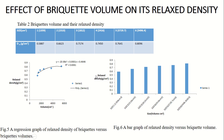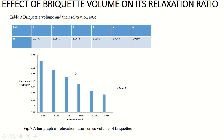Looking at the effect of briquette volume on relaxed density — which is measured after sun-drying — we can see that as the size increases, the relaxed density also increases. We can see the formula and the R-squared value. For briquette volume and relaxation ratio, we can see that the relaxation ratio reduces as the volume increases.